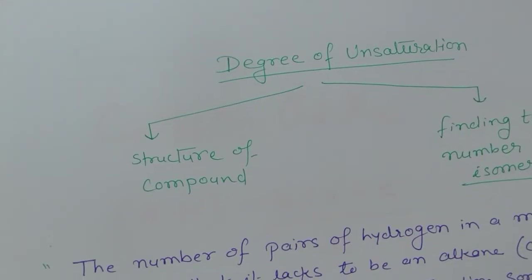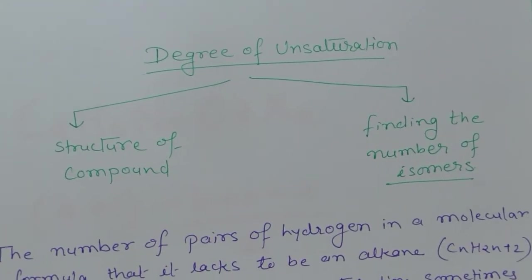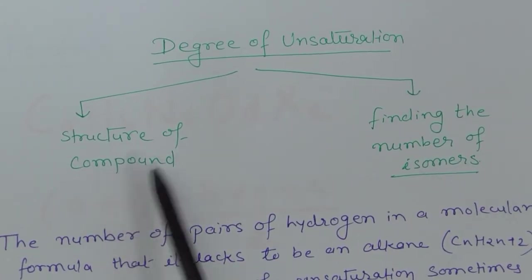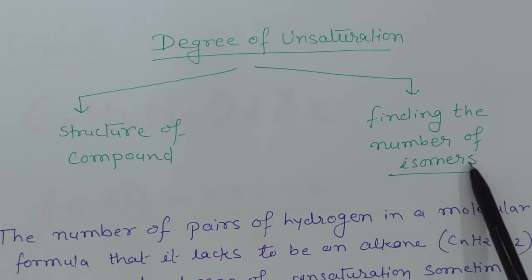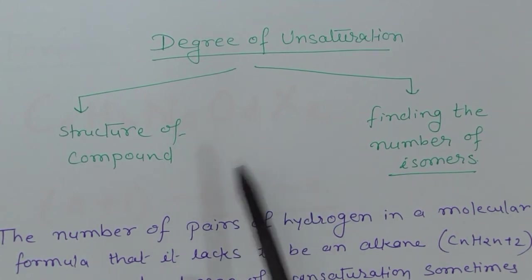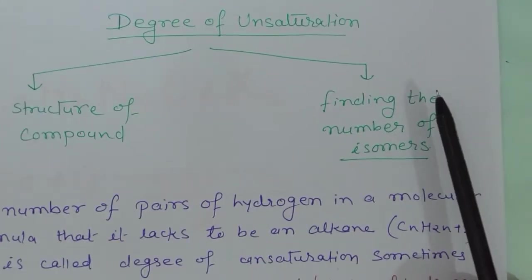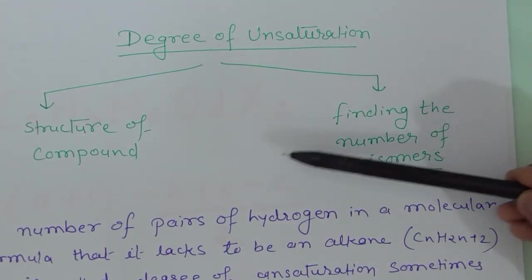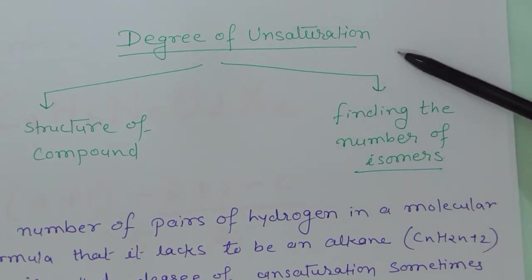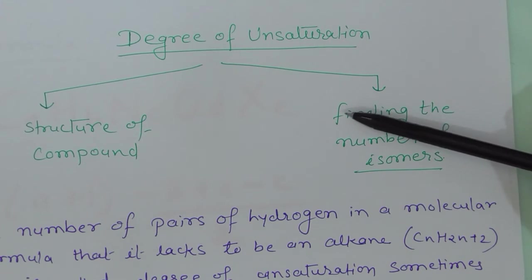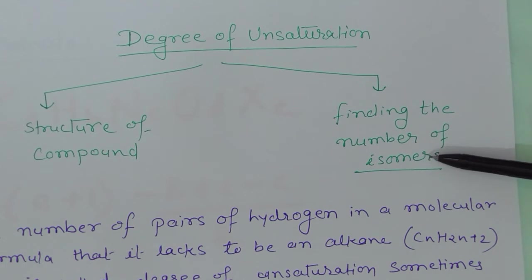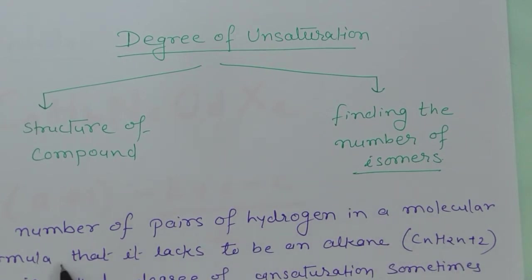The degree of unsaturation is useful in two ways: first, to find the structure of a compound, and second, to find the number of isomers. Suppose I get one degree of unsaturation — in how many ways can I draw the structure without changing the molecular formula? Those are called isomers.